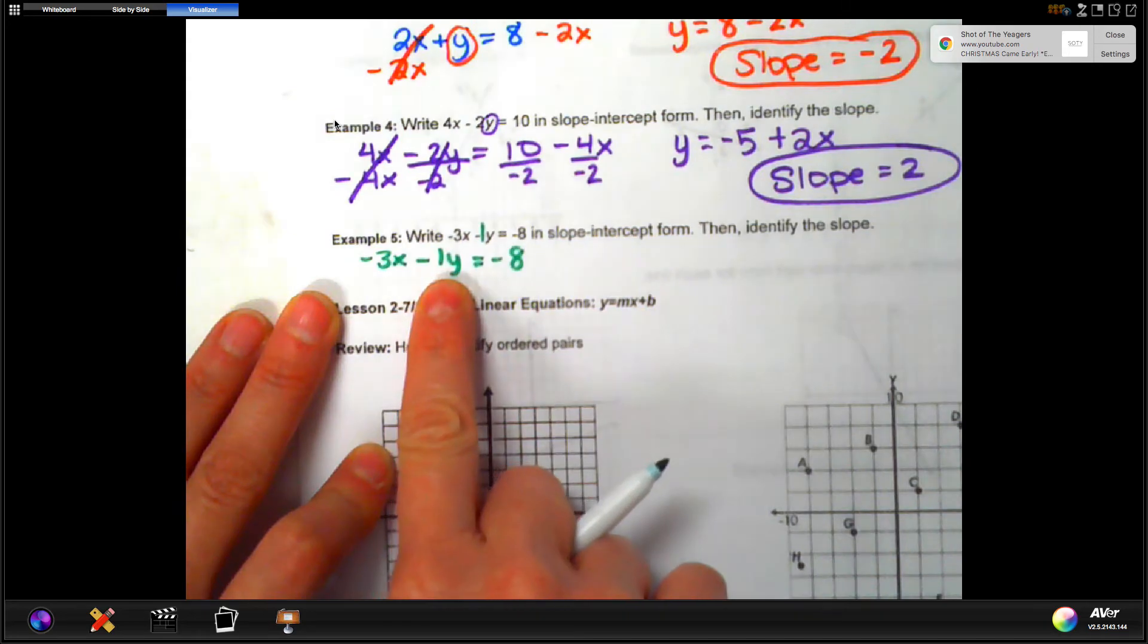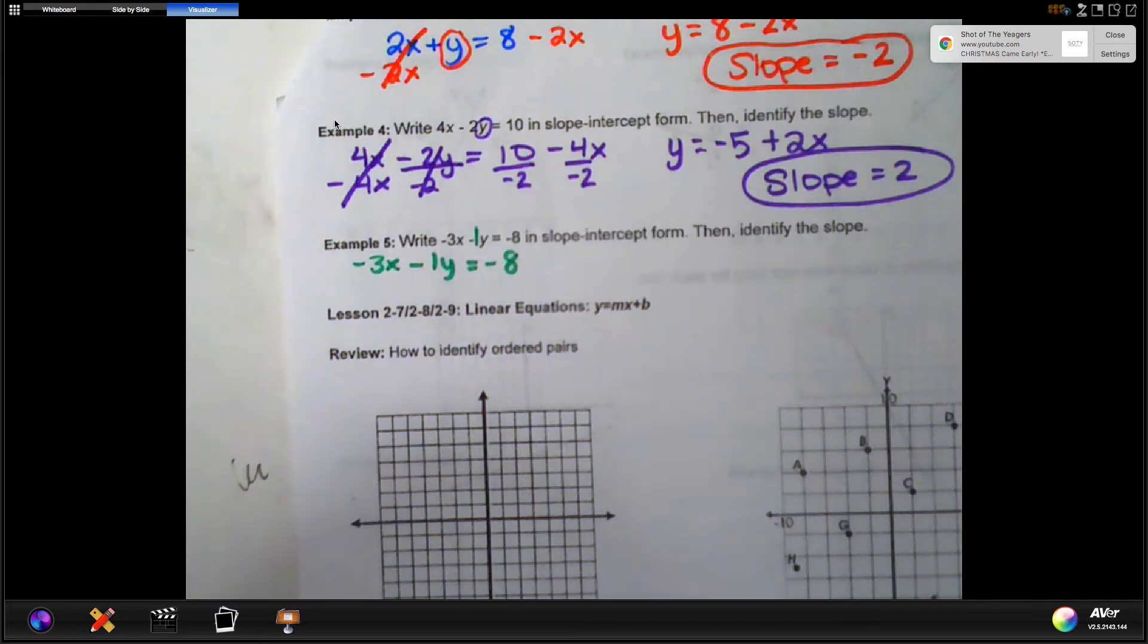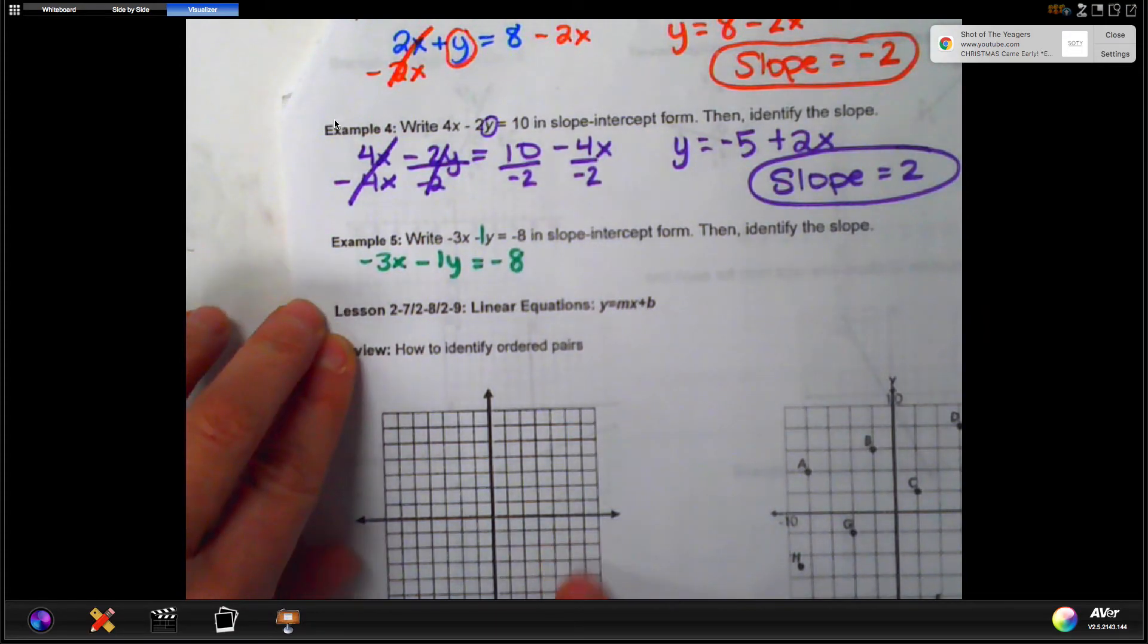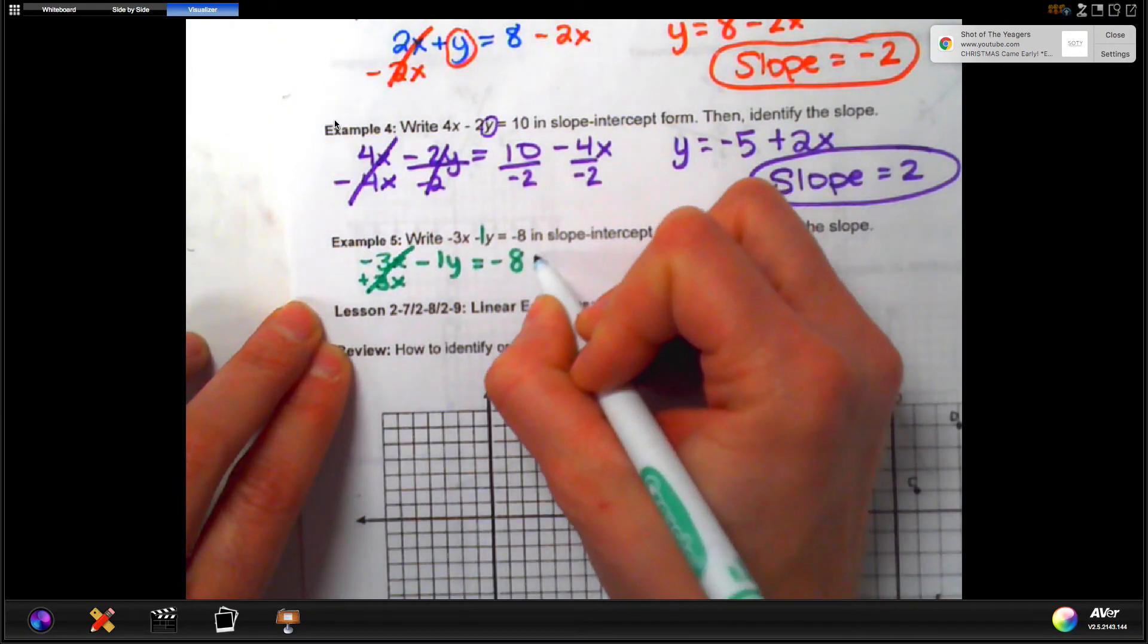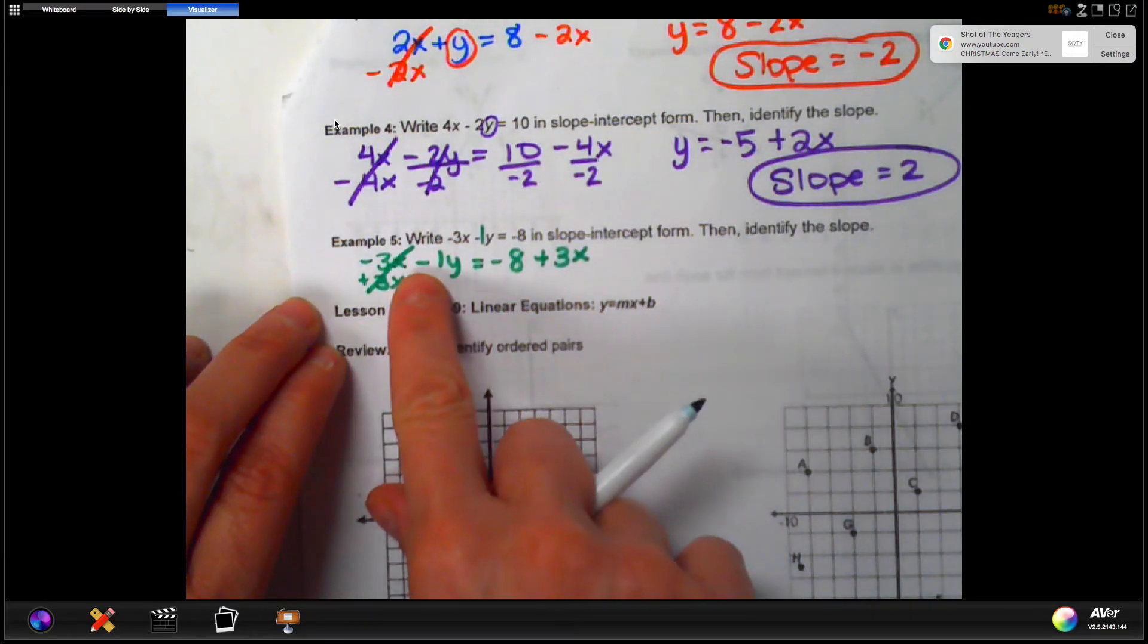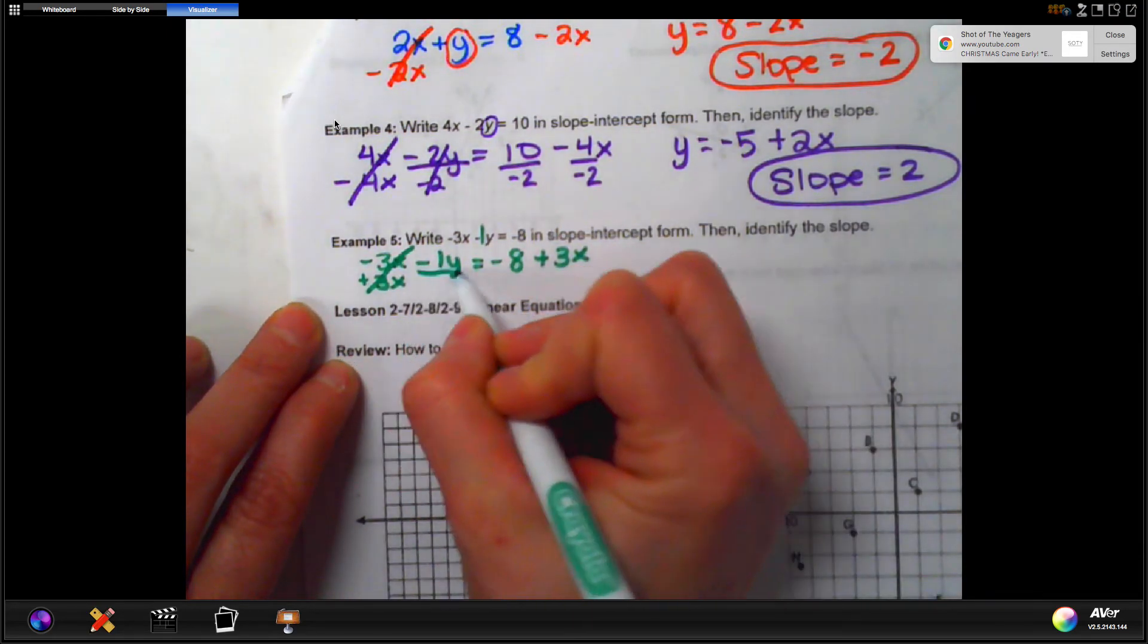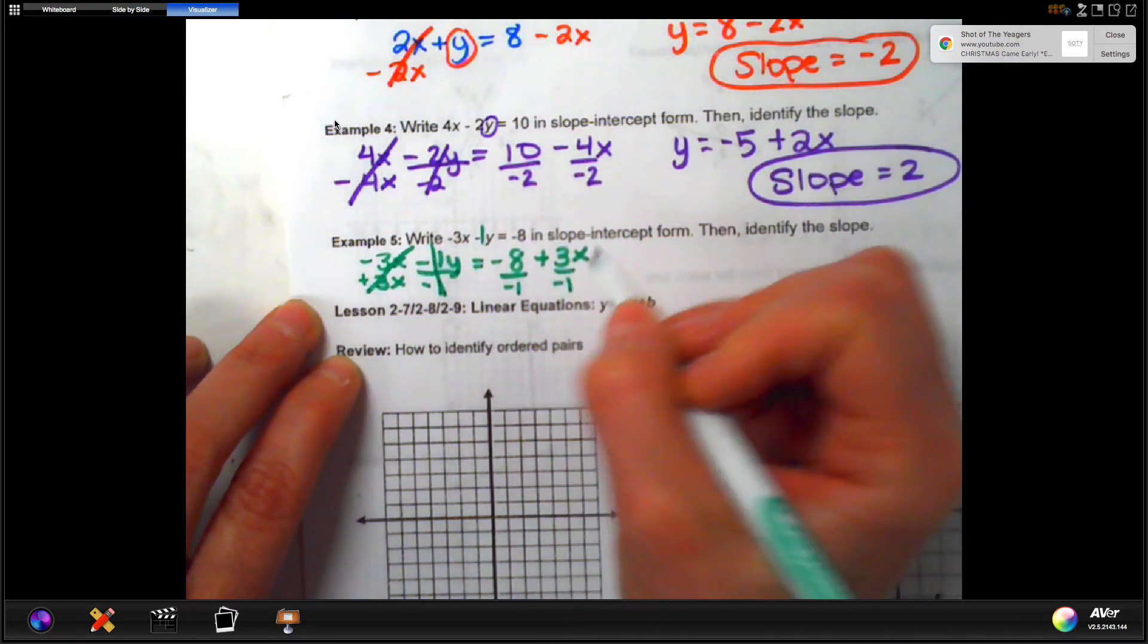We need y to be alone. So, negative 8 is already on the other side of the equal sign. So, we need to start furthest away from the y on this side, which would be the negative 3x. So, the opposite. To undo that, we would add 3x, cancel it. Then we have to add 3x over here. Now, we need to get out this negative 1. And again, this means negative 1 times y. So, to undo that, we will divide by negative 1. That means we have to divide each of the terms on the other side by negative 1.